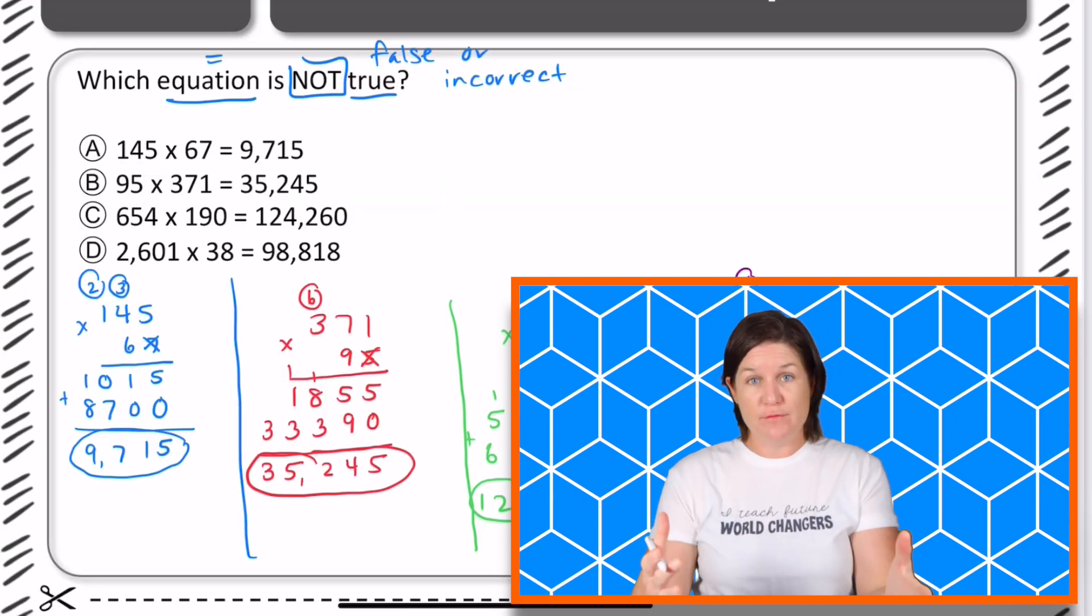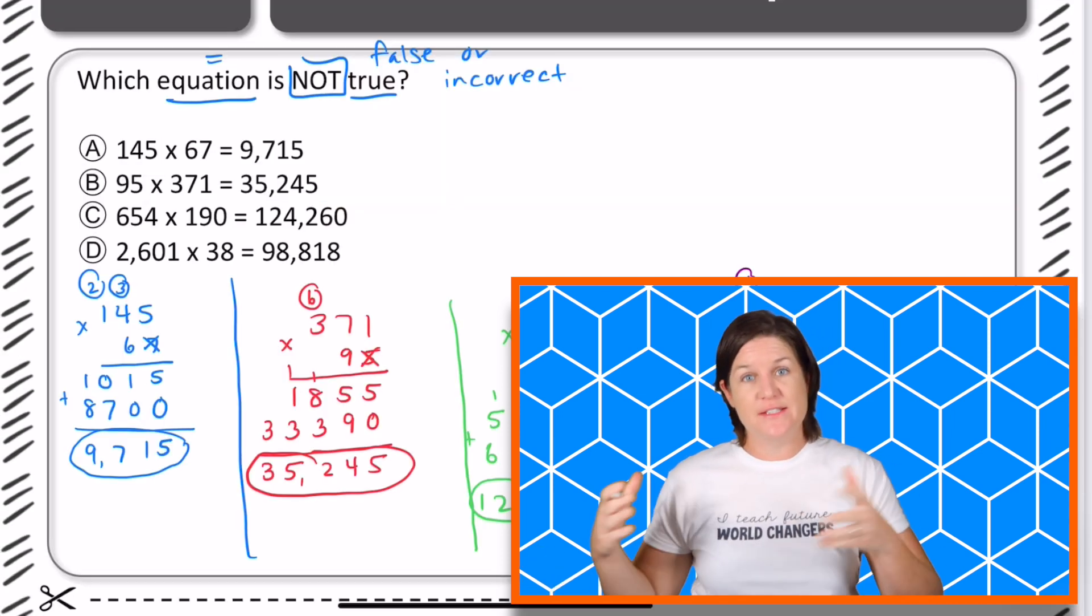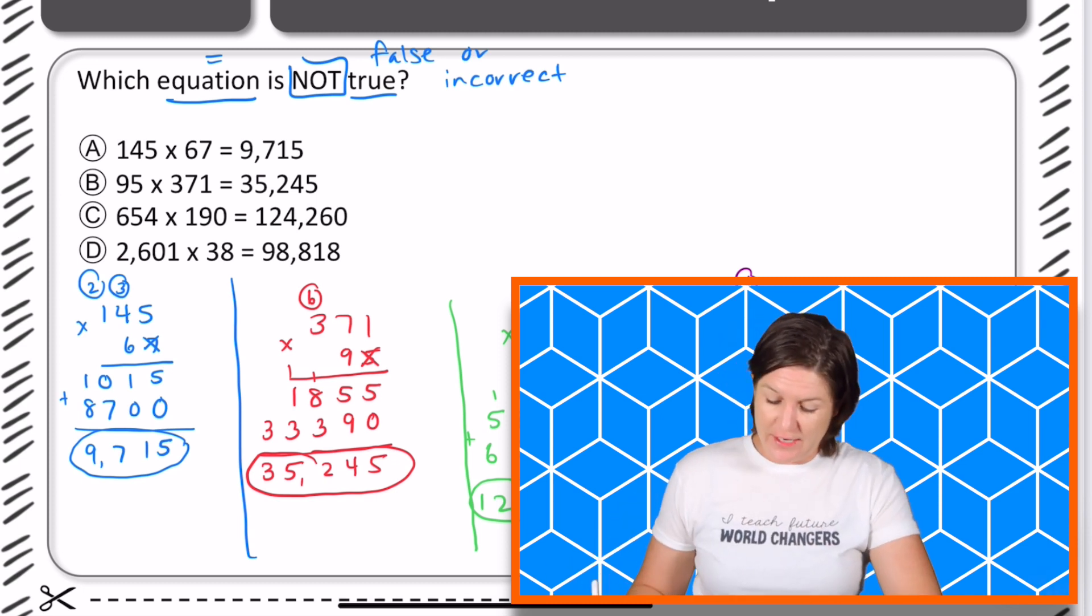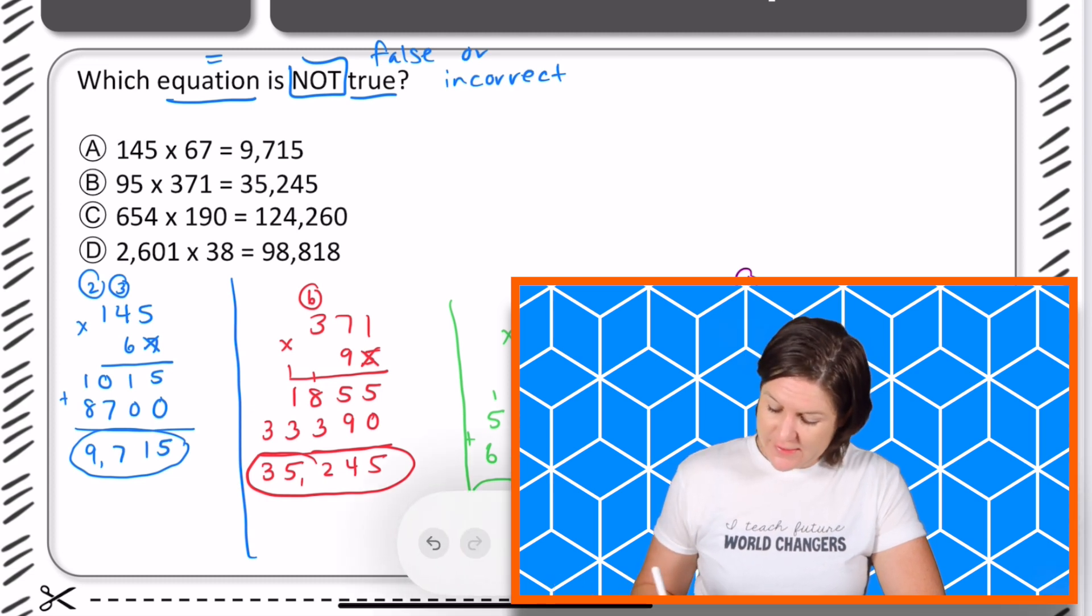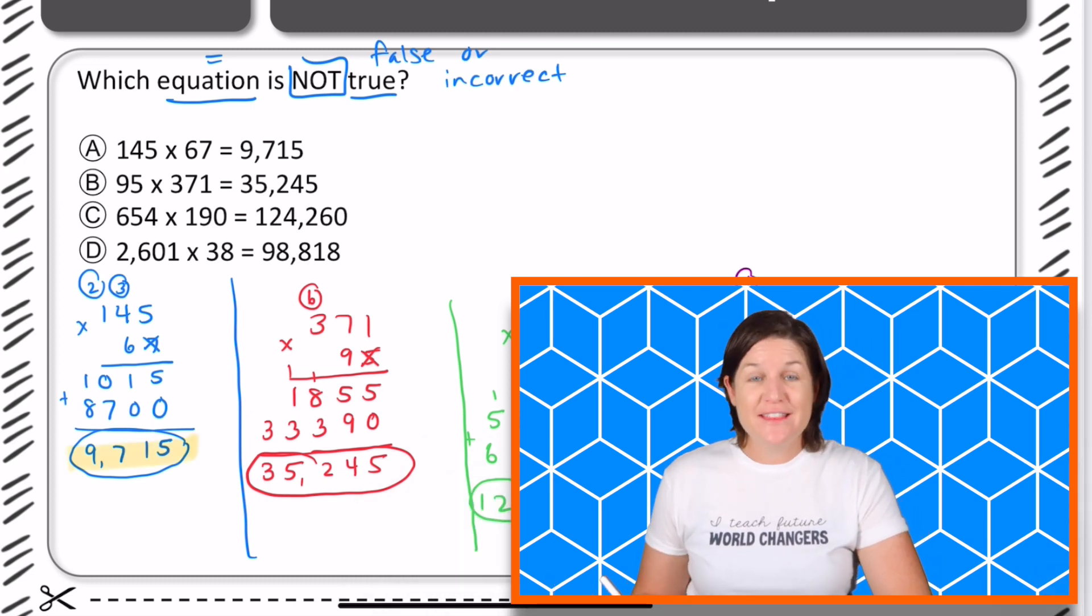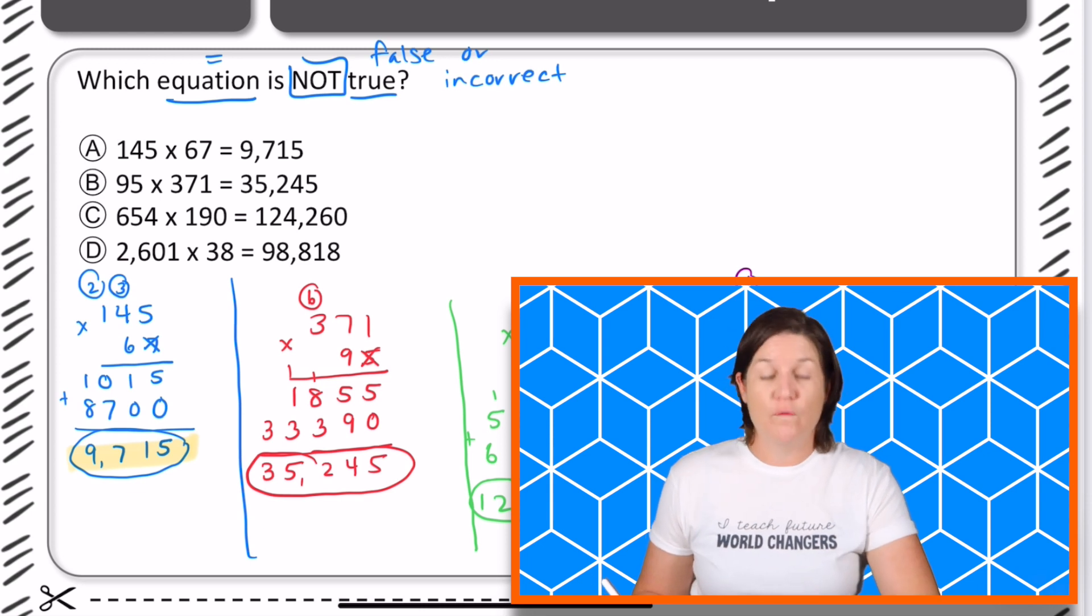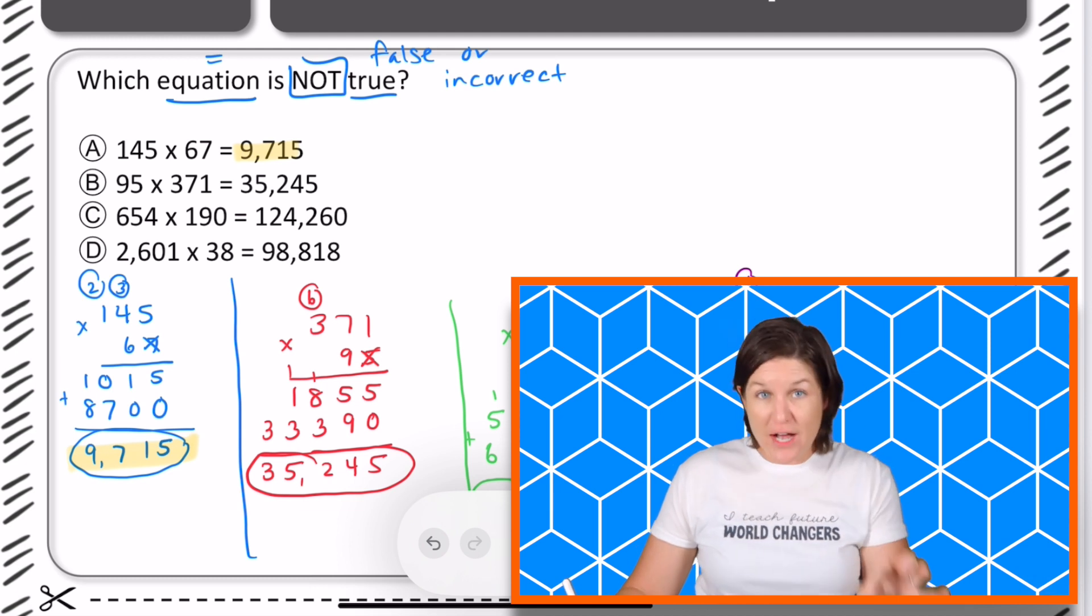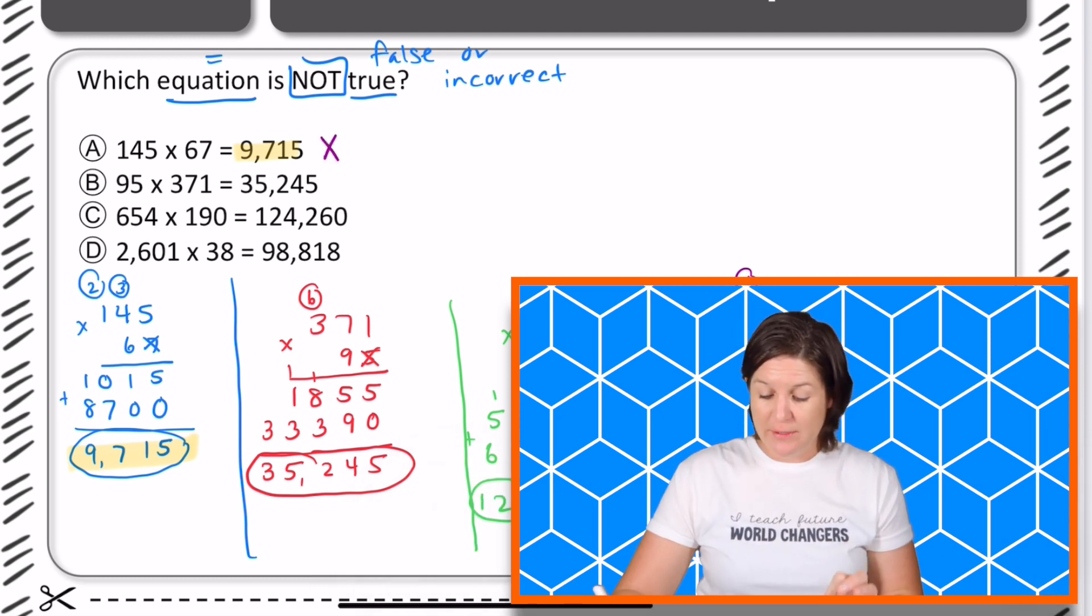All right, so welcome back. Now you should have solved out A, B, C, and D to see if the answers were correct just like I did. So here's what I did. I took the first one 145 and multiplied that by 67 and I got a product of 9,715 which is what this answer said right here. We're looking for the answer that is not true, so we can eliminate this one because it is true.